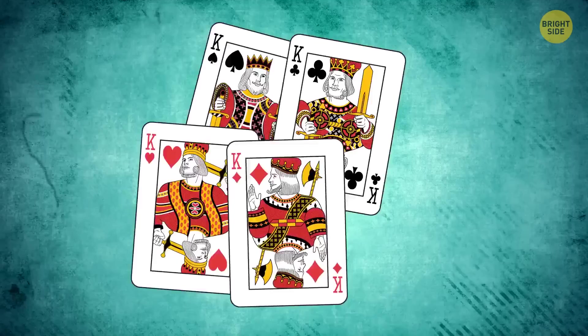Kings depicted on playing cards are real historical characters. Spades, King David. Clubs, Alexander the Great. Hearts, Charles the Great. Diamonds, Julius Caesar.